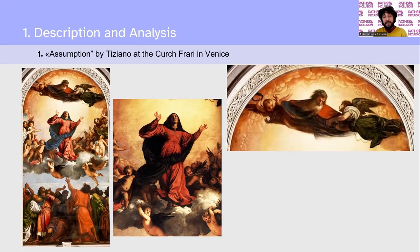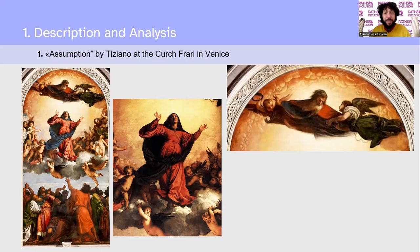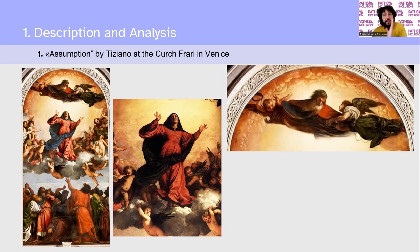Another detail I often like to underline because it makes me laugh: there is God with two angels on his left and right side, and one of them is bringing a crown. It feels like God was in such a rush to take the Holy Mary with him that he forgot to bring the crown. This could be a completely personal interpretation — maybe Titian intended something entirely different — but it's my interpretation, my feeling. The important thing is not to make your traveller believe that what you are saying is historical truth.